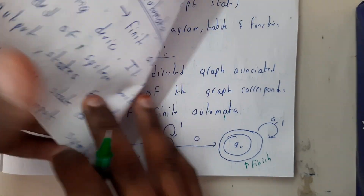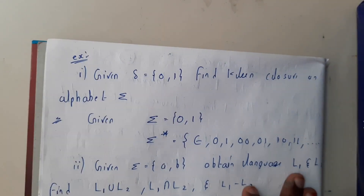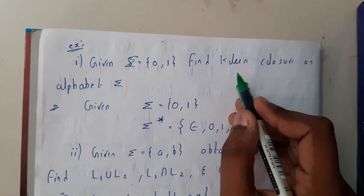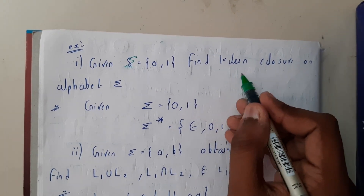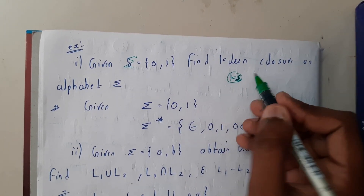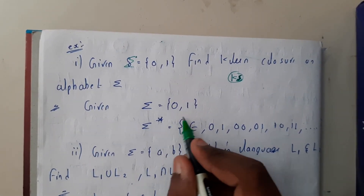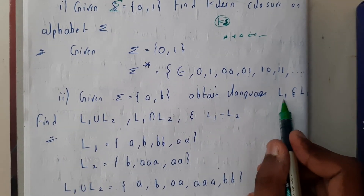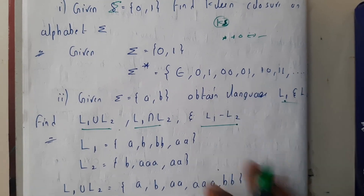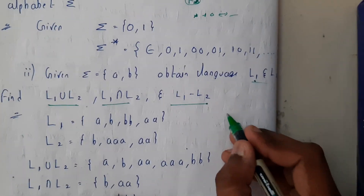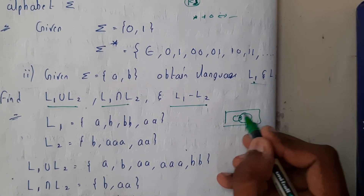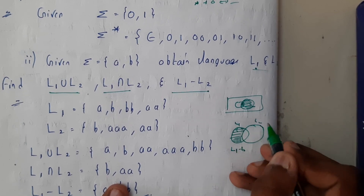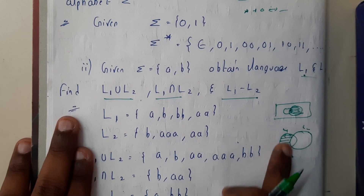Now let us go through two small examples. Given sigma, find the Kleene closure of the alphabet. Kleene star means zero or many, so sigma* gives all combinations you can write. For sigma equals {a, b}, do the operations union, intersection, and subtraction. Subtraction is the same as difference — we have already gone through difference, which means removing common elements.